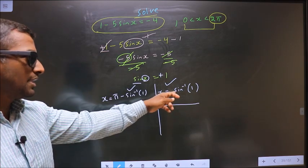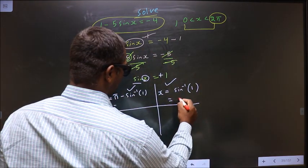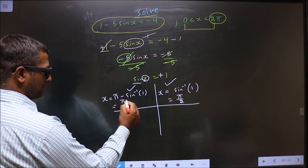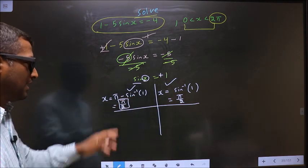Now put this in the calculator, you should get π by 2. This is our answer.